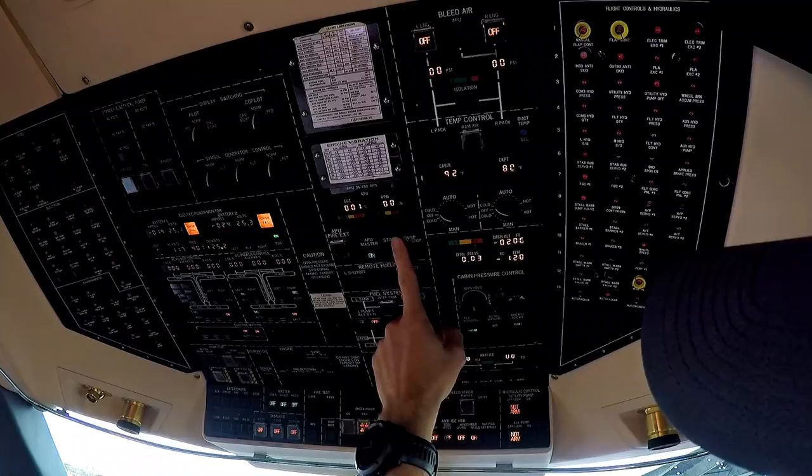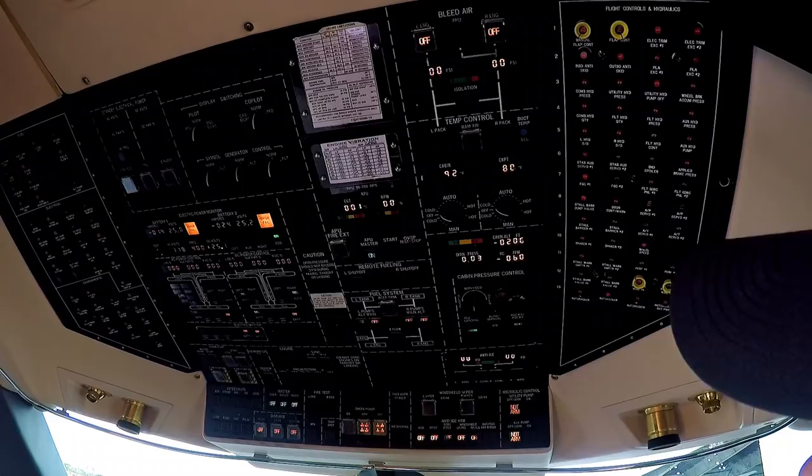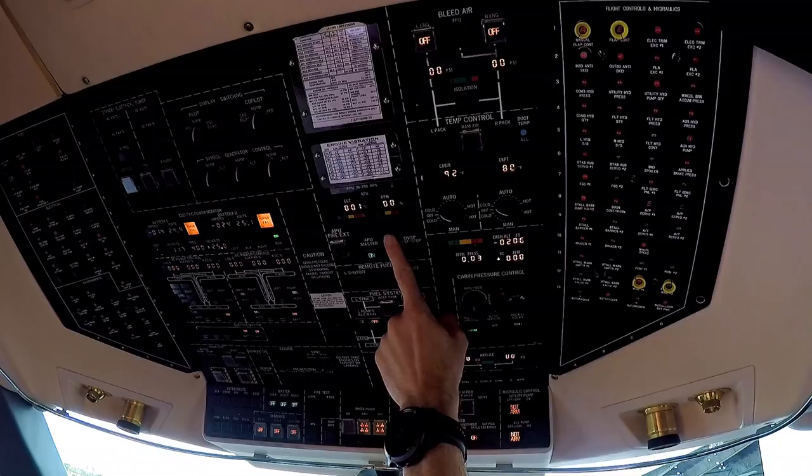Once we see that, we're going to overspeed the APU and make sure the shutdown function works properly. Overspeed it - notice the light went out, so the door is closing right now. That's a good test. We'll reset the APU master, once we get that light come back on then we know the door is reopened again.